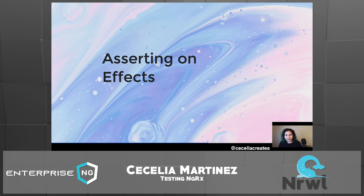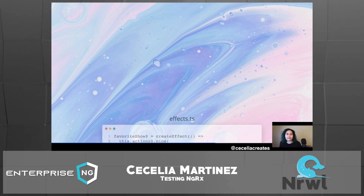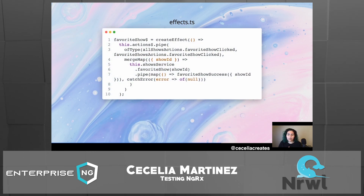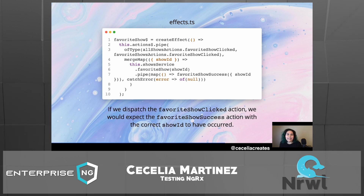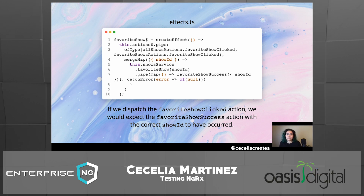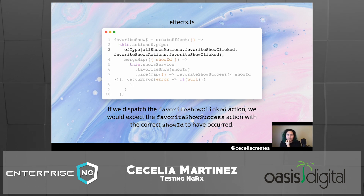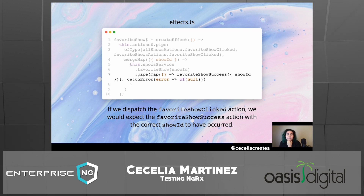Now asserting on effects — it's a similar concept. In our effects.ts file in our application code, we have a favorite show clicked action. We create an effect on it so that whenever a favorite show is clicked, we expect a favorite show success action with the correct show ID to have occurred. On line three, we're saying for any actions of type favorite show clicked, we expect favorite show success action with a show ID.